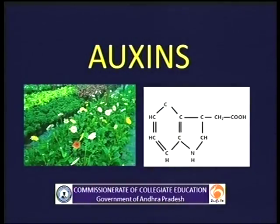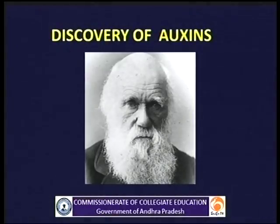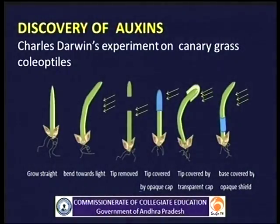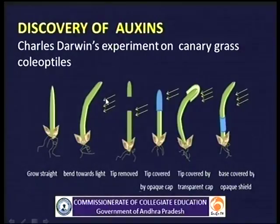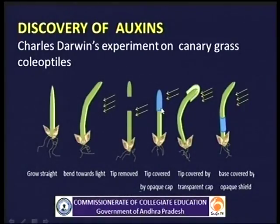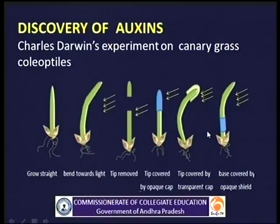Now let us discuss in detail about the auxins. Discovery of auxins: The discovery of auxins started with the experiments of Charles Darwin and Francis Darwin on the coleoptiles of canary grass. In their experiment, they observed that the seedlings grew straight in dark, and when these seedlings were subjected to unilateral light, the coleoptiles bent towards the light. When the tip of the coleoptile is removed or covered with an opaque cap, they do not bend towards the light. But they bend when the tip is covered with a transparent cap or the base is covered with an opaque shield. From this, they concluded that the tip of the coleoptile was responsible for sensing the light.